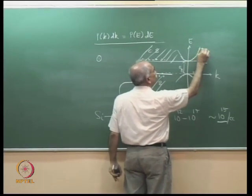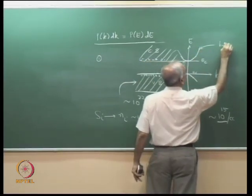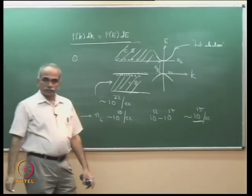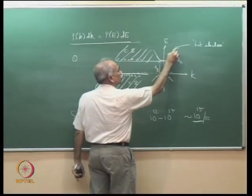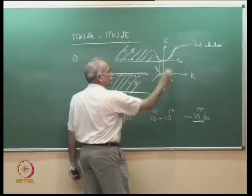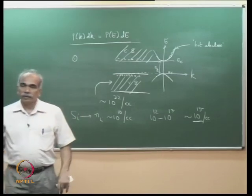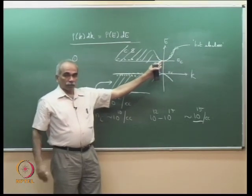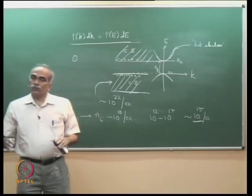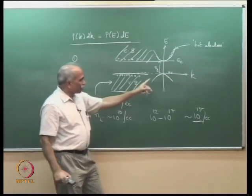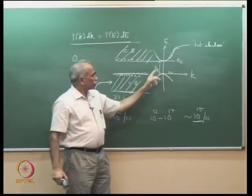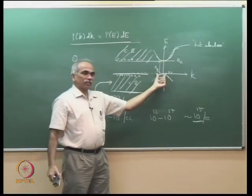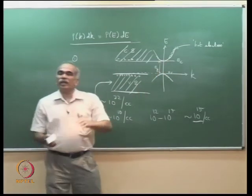A 'hot electron' — an electron with higher energy — will come down by a phenomenon called thermalization. We will discuss this more when we introduce phonons. It will thermalize and come back to the bottom. Therefore, in all device analysis it is sufficient to know the E-k variation near the bottom, since almost all carriers accumulate there.